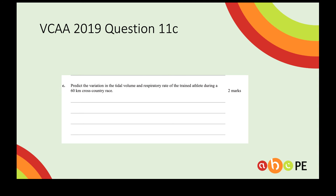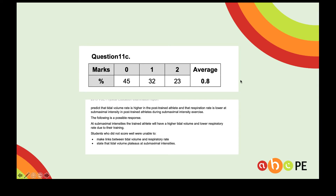Here's a question from last year's VCAR exam — I'll give you a second to have a crack at that. Only a quarter of the state got this one right. The answer is that after training your tidal volume is higher and your respiratory rate will therefore be lower at sub-max intensities. If we move up to max intensities, our tidal volume will be higher and our respiratory rate will be the same, which means we have a higher ventilation.